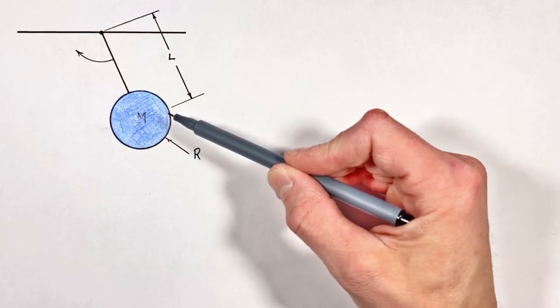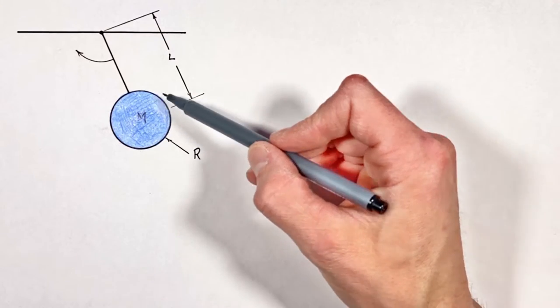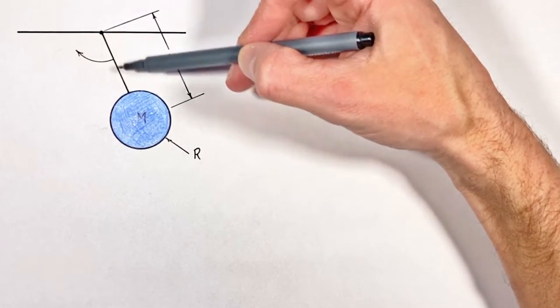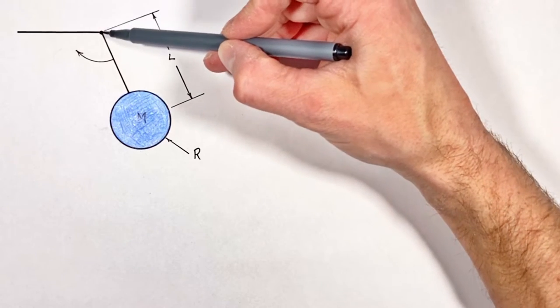All right YouTube, today we're taking a look at the parallel axis theorem. To do that, we're gonna put a solid cylinder on the end of a rigid rod, and that cylinder and rod are gonna rotate around